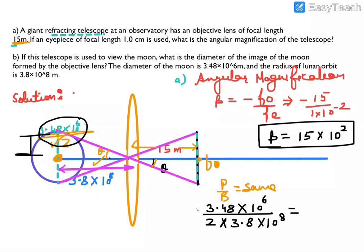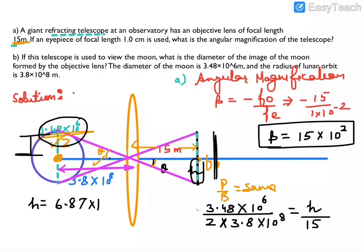The perpendicular on the object side is 3.48×10⁶ divided by 2, and the base is 3.8×10⁸. Similarly on the image side, the perpendicular is h and the base is 15 m — the full focal length. We need the full length so we will double h. We calculate h first.